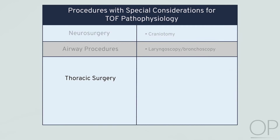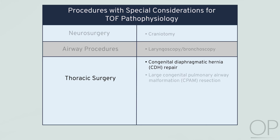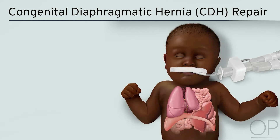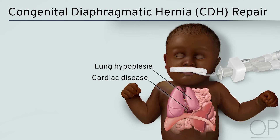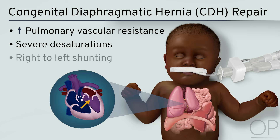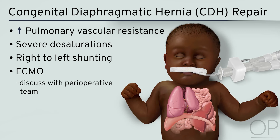Inadequate levels of anesthesia during tracheal stimulations can result in significant catecholamine surges and trigger TET spells and profound desaturations. Examples of thoracic conditions include congenital diaphragmatic hernia, large congenital pulmonary airway malformation, and esophageal atresia/tracheoesophageal fistula repair. Once considered a surgical emergency, neonatal repair of congenital diaphragmatic hernias is nowadays rather viewed as an urgent repair; the timing is based on the patient's status and the extent of lung hypoplasia and cardiac disease. Increased pulmonary vascular resistance and severe desaturations unresponsive to conventional treatment are feared complications during congenital diaphragmatic hernia repair. In combination with Tetralogy of Fallot, massive right-to-left shunting via the VSD can exacerbate the situation and lead to profound hypoxia. The best timing and indications for ECMO support should be discussed with the perioperative care team.